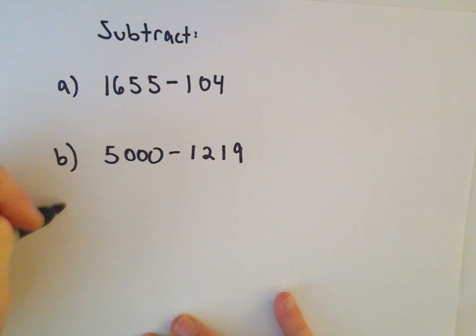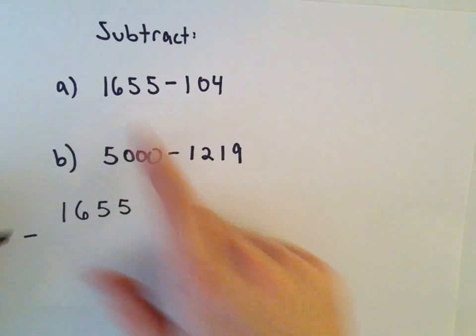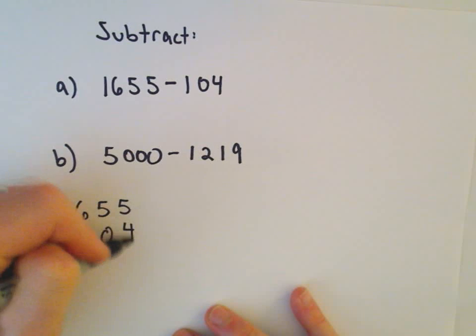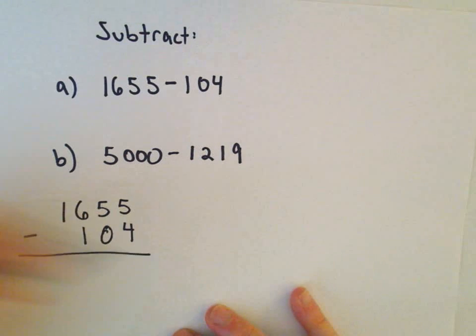So I'm going to take them in order. So 1, 6, 5, 5 minus, and notice I'm careful to line everything up, all the units correctly. So we've got 1,655 minus 104.